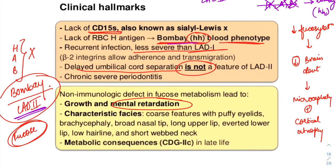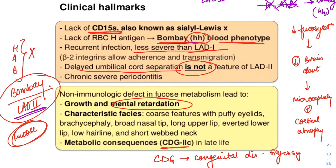LAD2 may also be known as a congenital disorder of glycosylation — CDG type 2 — because of the primary defect in fucose metabolism.